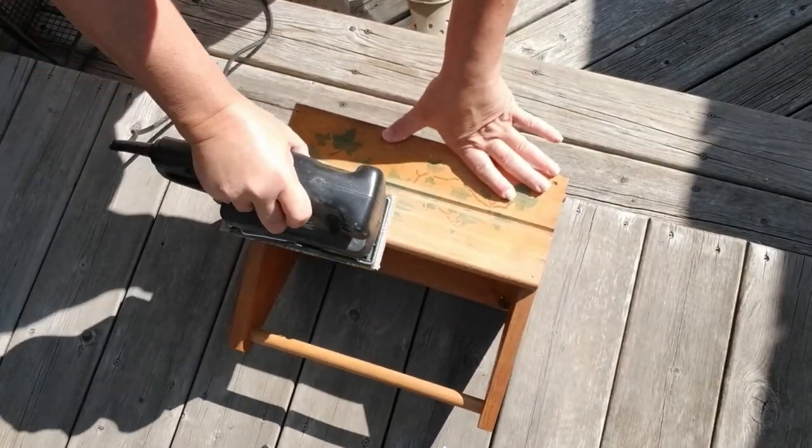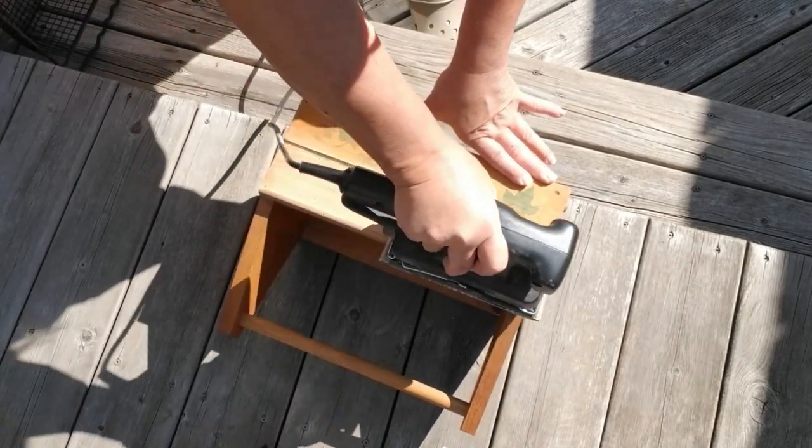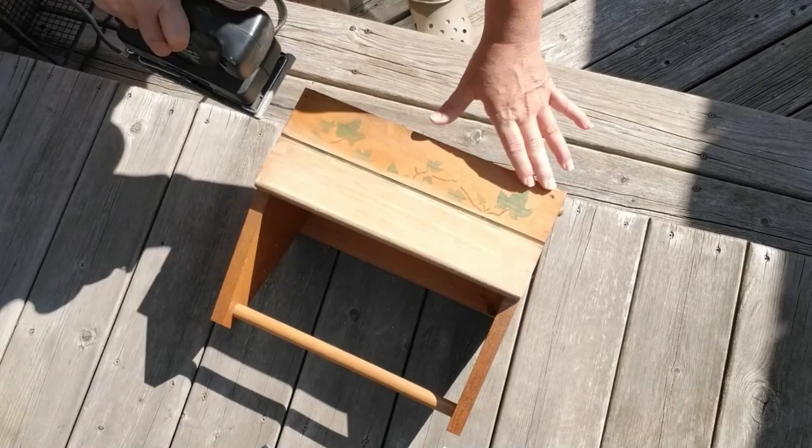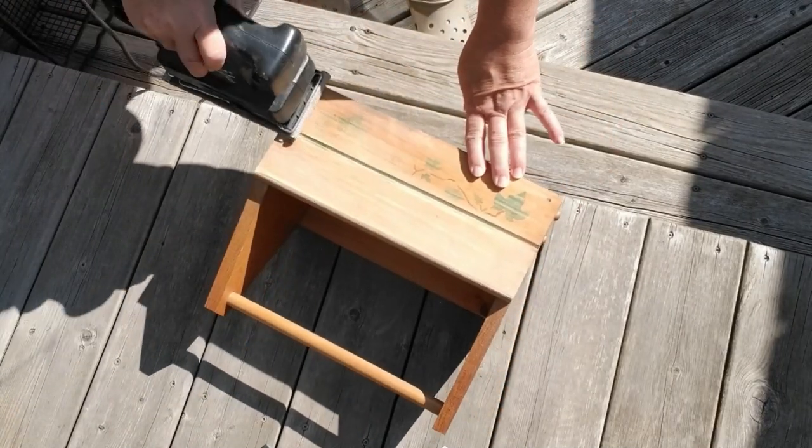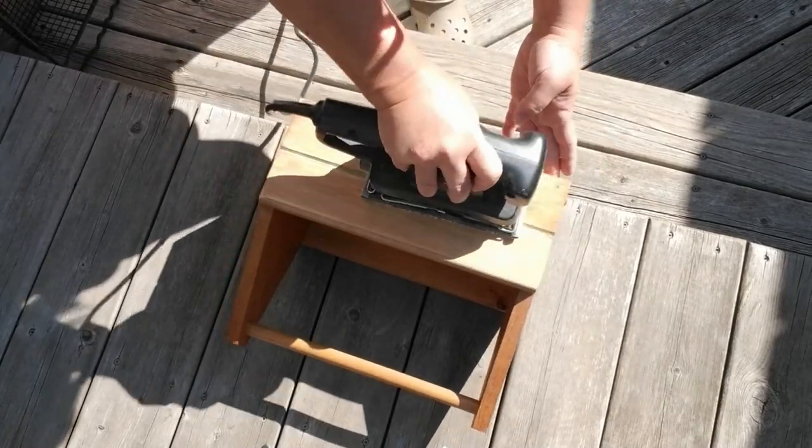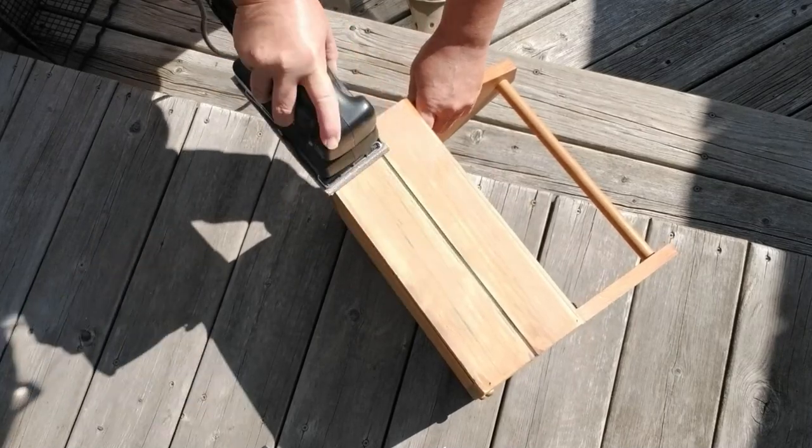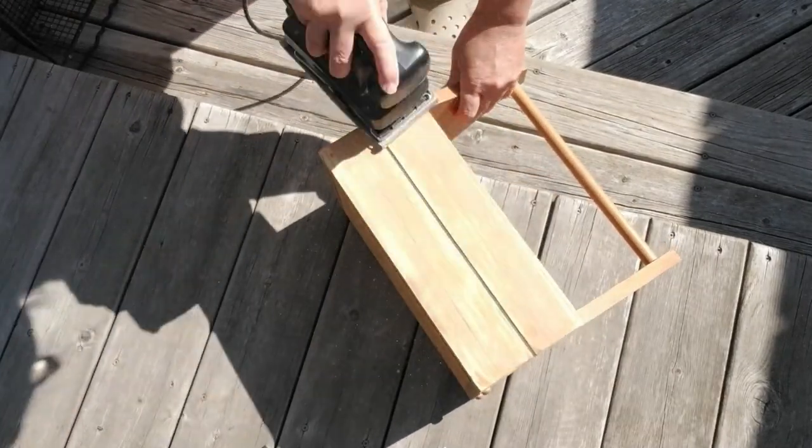But I do need to get rid of those green ivy leaves. So I'm taking it outside and giving it a good sanding with my sander. It's taking off all of that green paint really nicely and it's also going to get me down to a little bit more of the bare wood. So when I want to stain it, it's going to take the stain a lot better.